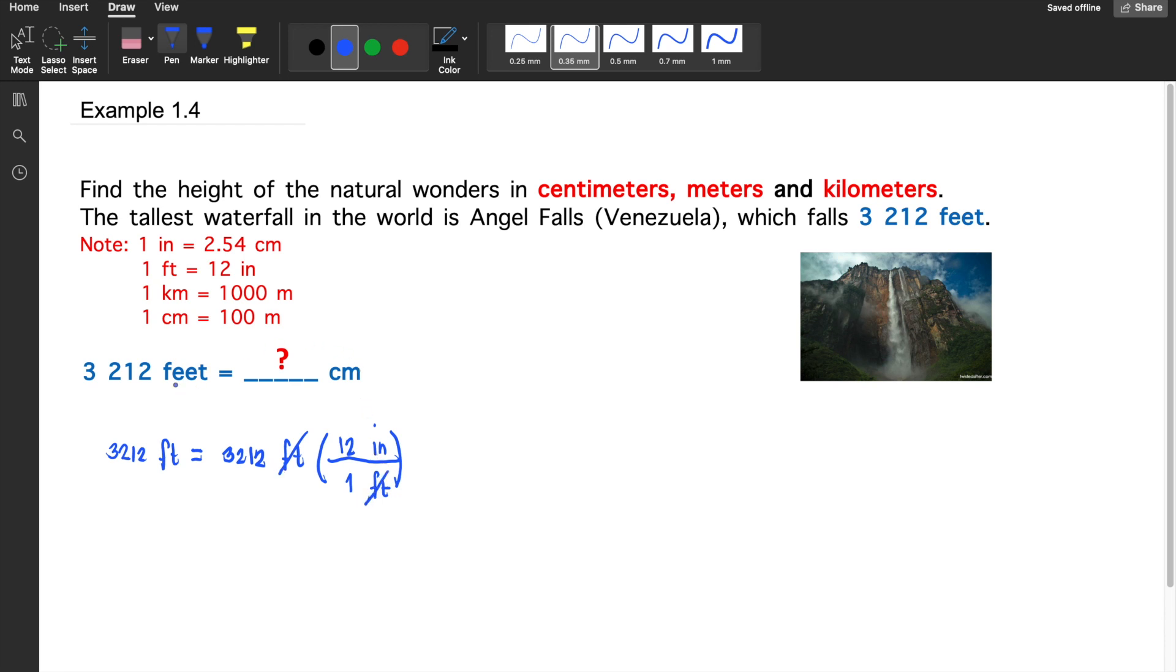We're not yet done. I'll multiply another conversion factor to cancel out the inches in the numerator. I'll write inches in the denominator and the desired unit, centimeters, in the numerator. Using the conversion factor, one inch equals 2.54 centimeters. This can be canceled out, so the unit that is left is centimeters.